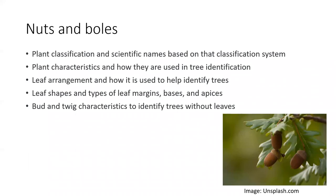Here are some of the topics we'll cover today: how plants are classified and the scientific names given to them based on that classification system; characteristics of plants and how they're used in tree identification; leaf and branching arrangement and how that's used to help identify some of the leaf shapes and types of leaf margins, bases, and apices or tips of the leaves.